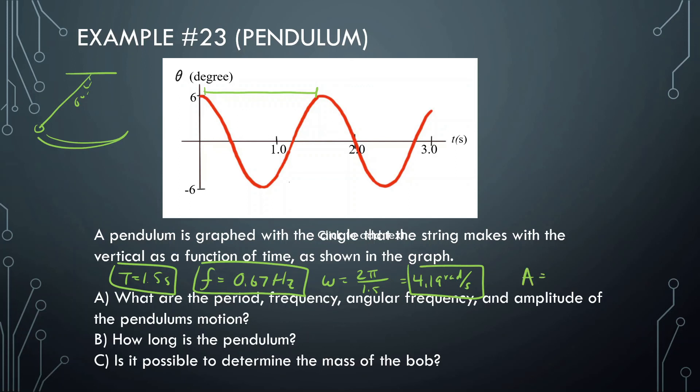And then the amplitude. When it comes to the amplitude for a simple pendulum, it's just the angle here, so it's going to be the 6 degree angle.